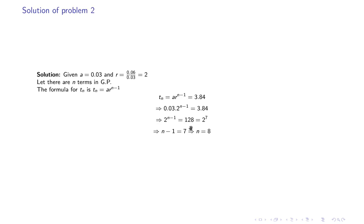The second problem asks: how many terms are in the GP 0.03, 0.06, 0.12, up to 3.84? The first term is 0.03 and the common ratio is 2. Substituting into the nth term formula gives 0.03·2^(n-1) = 3.84. Dividing 3.84 by 0.03 gives 128 = 2^7. Comparing powers, n - 1 = 7, so n = 8.